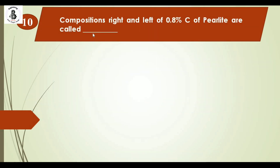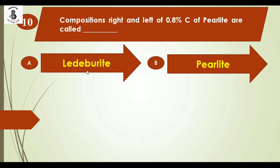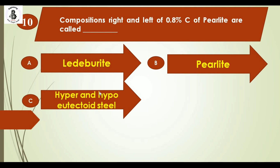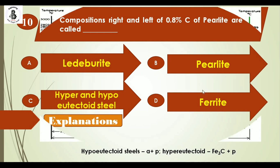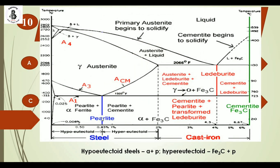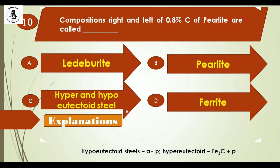Question 10: Compositions to the right and left of 0.8% carbon of pearlite are called as — Option A: Ledeburite, Option B: pearlite, Option C: hyper and hypo eutectoid steel, Option D: ferrite. Before 0.8% carbon: pearlite plus alpha ferrite (hypo eutectoid). After 0.8% carbon: pearlite plus cementite (hyper eutectoid). The right answer is option C: hyper and hypo eutectoid steel.